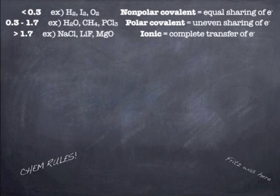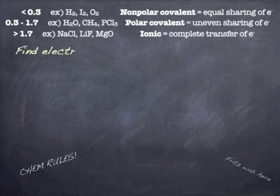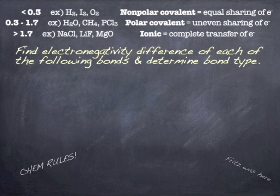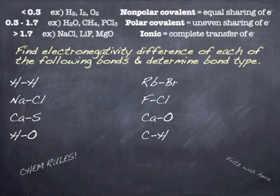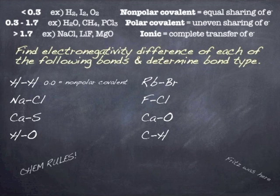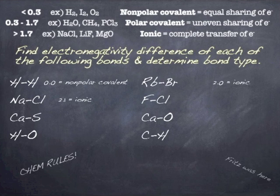Let's look at some example problems. Anytime you see an element bonded with itself, you get a zero difference — that's flatly nonpolar covalent, like diatomic hydrogen. A rubidium-bromine bond has a difference of 2.0, so that's an ionic bond — and that makes sense, it's a metal and a nonmetal. Same with sodium chloride, that would be ionic too.